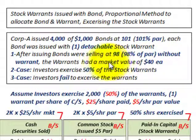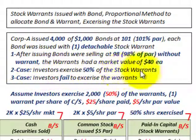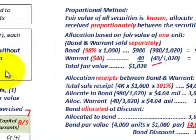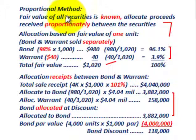There's one warrant attached to each of these bonds. We're going to look at two cases: one where investors exercise 50% of the stock warrants, and another where investors fail to exercise any of the warrants. First, let's go through this proportional method to determine how we'd handle paid-in capital on these stock warrants when we come to exercising them.